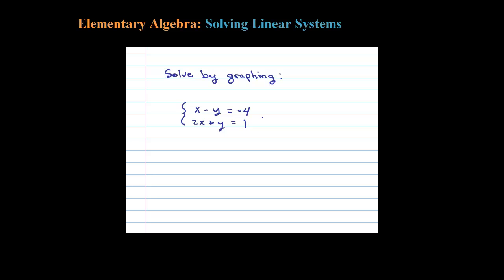Here we're asked to solve this linear system by graphing. Given two lines, find the simultaneous solution - in other words, the point where they cross. Now it's going to be much easier to graph if we put it in slope-intercept form, y equals mx plus b, so let's go ahead and do that.